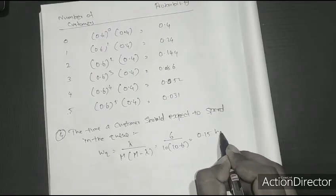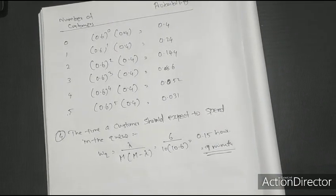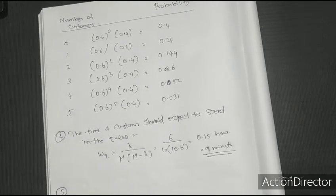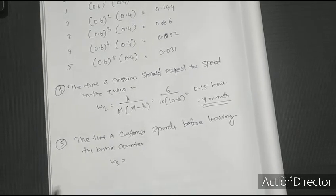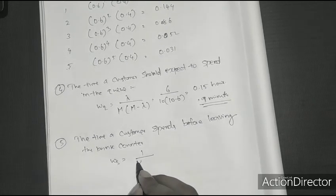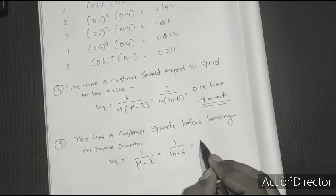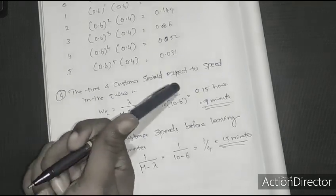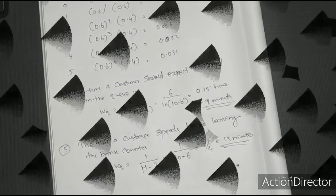The answer for the fourth question is 9 minutes — that is the time a customer spends waiting in the queue, Wq. For the fifth question, the time a customer spends before leaving the bank counter is Ws, calculated as 1 divided by (mu minus lambda), which is 1 divided by (10 minus 6) equals 1/4 hour, that is 15 minutes.